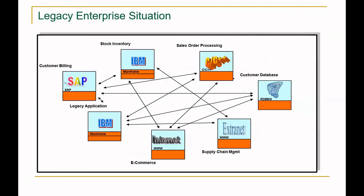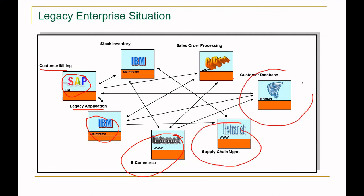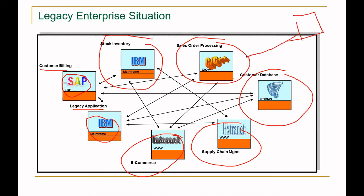An enterprise situation example: consider a customer-facing environment using SAP ERP, IBM mainframes, an e-commerce website, and supply chain systems, along with a customer database, sales order processing, and stock inventory. All these applications need to be integrated and communicate with each other. Middleware technologies make it possible to extract useful data from various sources in response to customer requests.